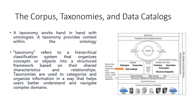Taxonomy works hand in hand with ontology. A taxonomy provides context within the ontology. Taxonomy refers to a hierarchical classification system that organizes concepts or objects into a structured framework based on their shared characteristics and relationships. Taxonomies are used to categorize and organize information in a way that helps users better understand and navigate complex domains — it is more about the hierarchy we are talking about.